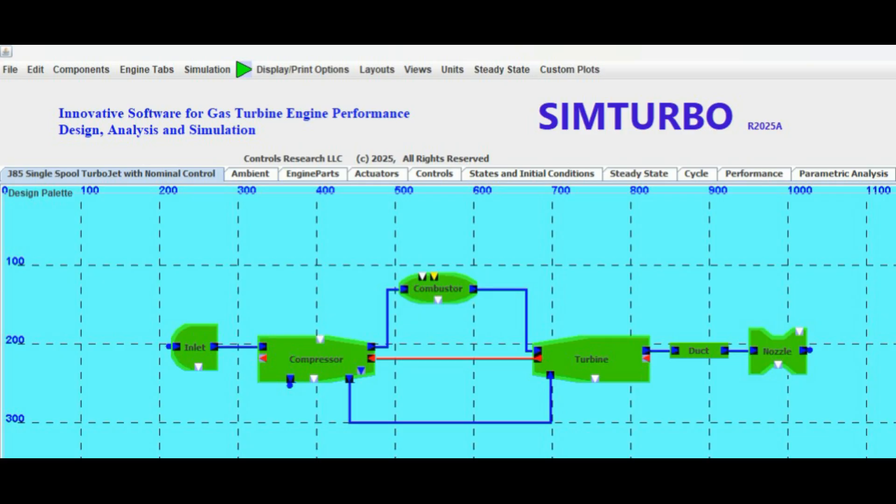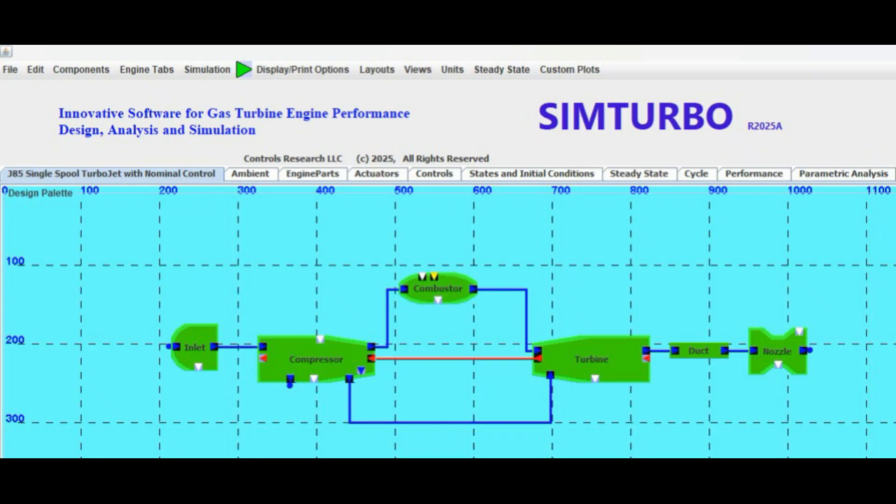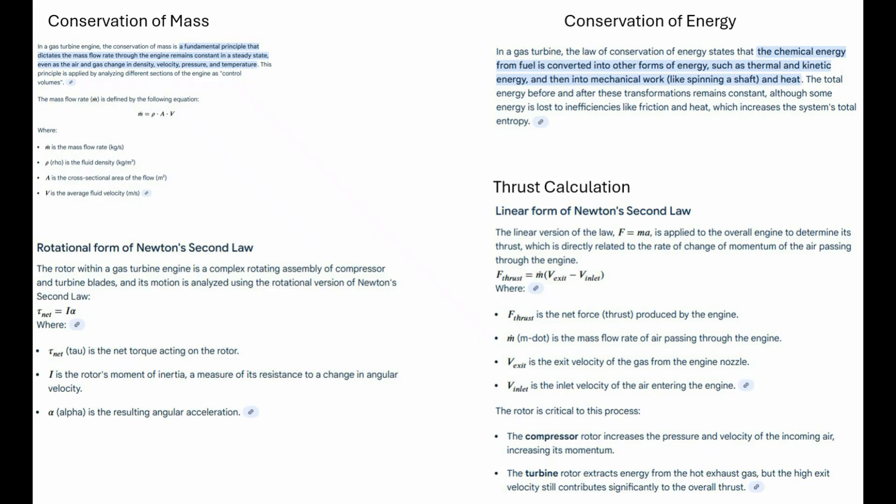Let's unpack that a bit, starting with the difference between zero-D and one-D. It sounds like it's all about trading that spatial detail for raw speed. Zero-dimensional, sometimes called the lumped parameter approach, basically treats each big part, like the compressor or the turbine, as just a single black box. You only really track what goes in the front and what comes out the back - inlet conditions, outlet conditions, that's it. By ignoring all that internal spatial variation, you take these huge complex physics equations, partial differential equations usually, and boil them down to much simpler ordinary differential equations. Which means a massive speed boost. You've basically swapped needing infinite points in space for just one result per component.